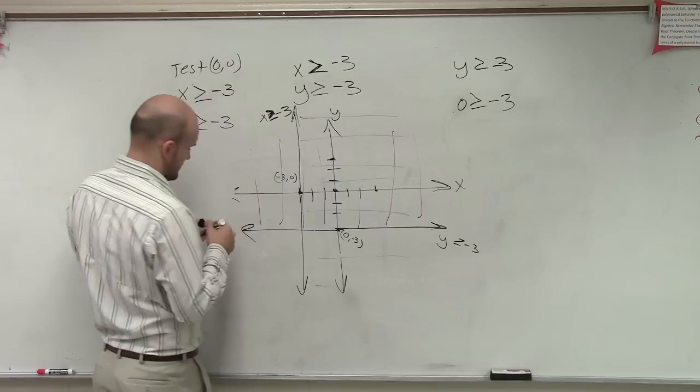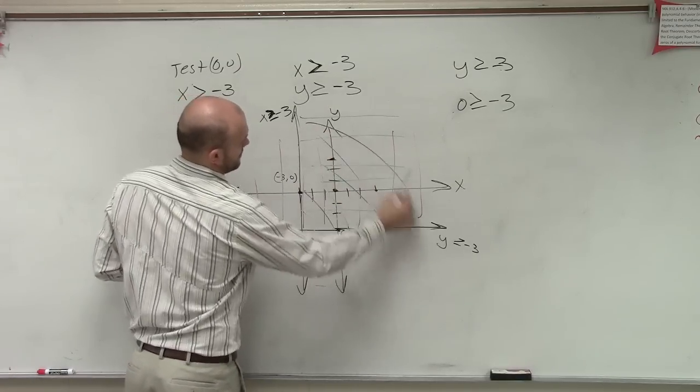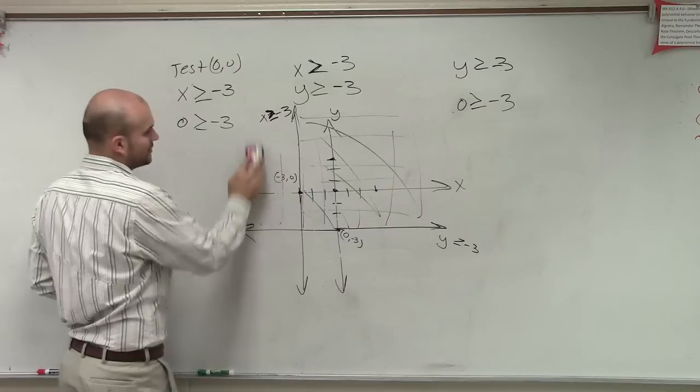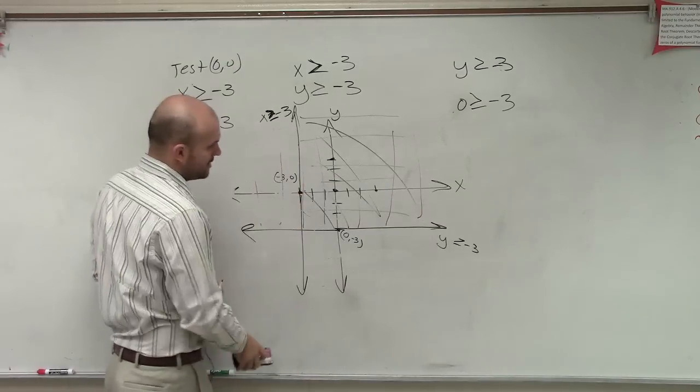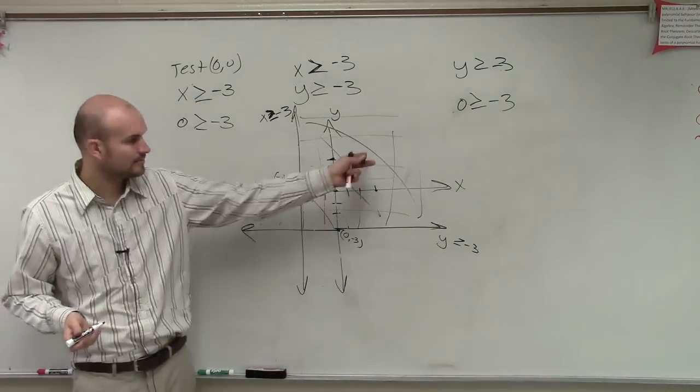So you can kind of like reshade it in, and a lot of times we like to kind of eliminate the rest of these lines. Because even though they're true for one equality, they're not true for both of them. OK? And there you go. There's your solution.